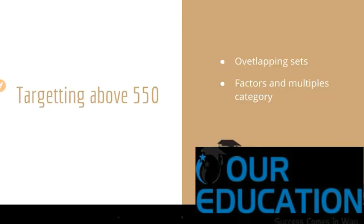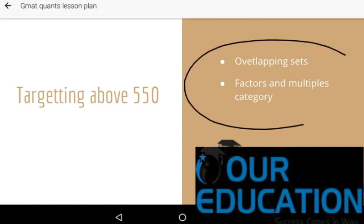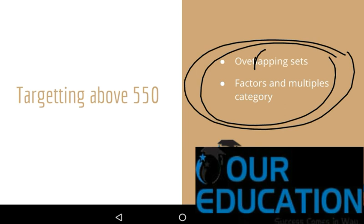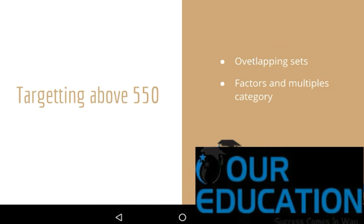If you are targeting a score above 550, my analysis suggests you should also focus on overlapping sets and factors and multiples for an extra edge — apart from the previously mentioned core topics. You will get around two or three questions from these topics as your score progresses above 550, since this is how the GMAT adapts by introducing harder questions from these categories.